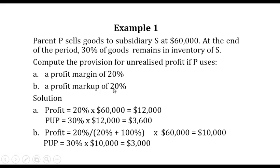Case B: a profit markup of 20%. This time profit is based on cost. Profit equals 20% divided by (20% + 100%), multiplied by $60,000, which gives $10,000. This is the profit included during the sale. To obtain the provision for unrealized profit, we take 30% of $10,000, giving $3,000.